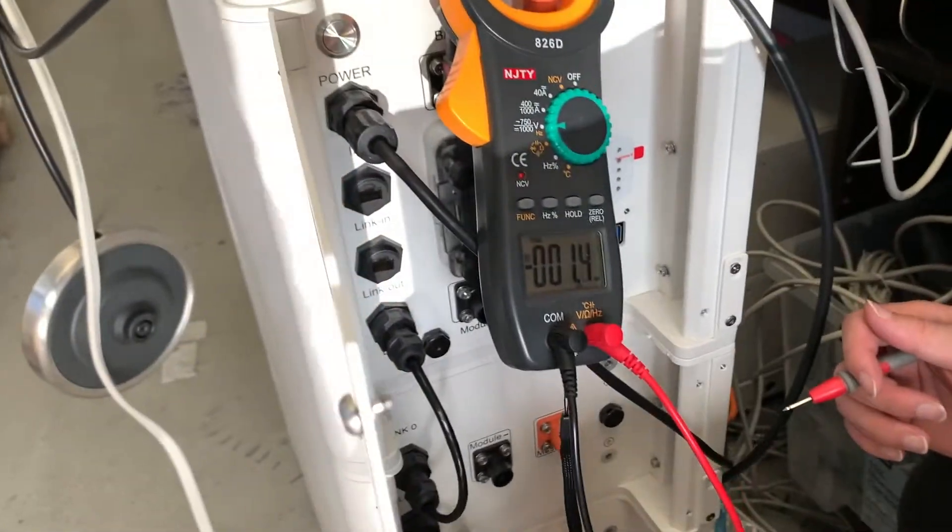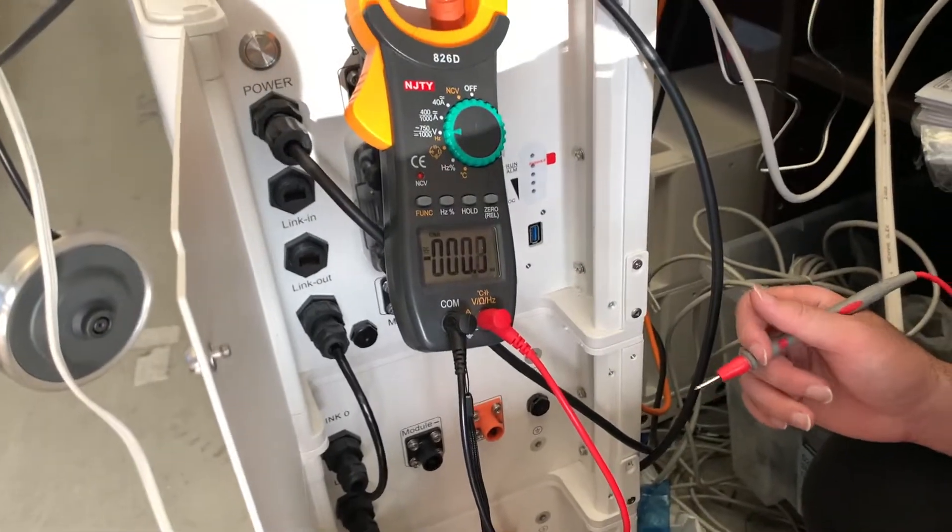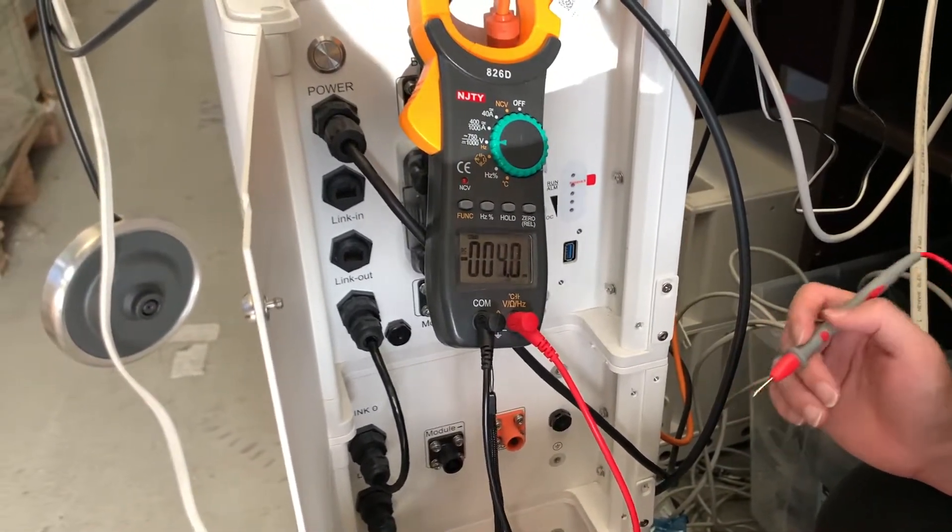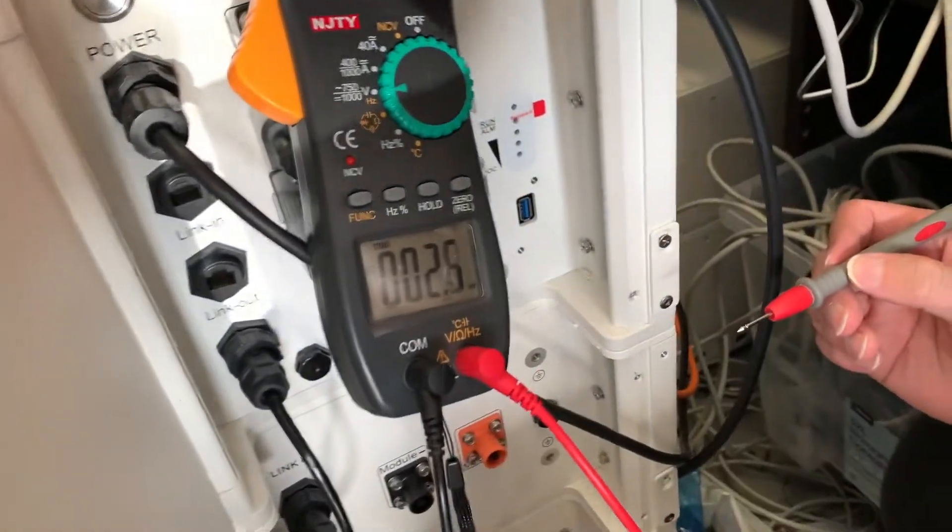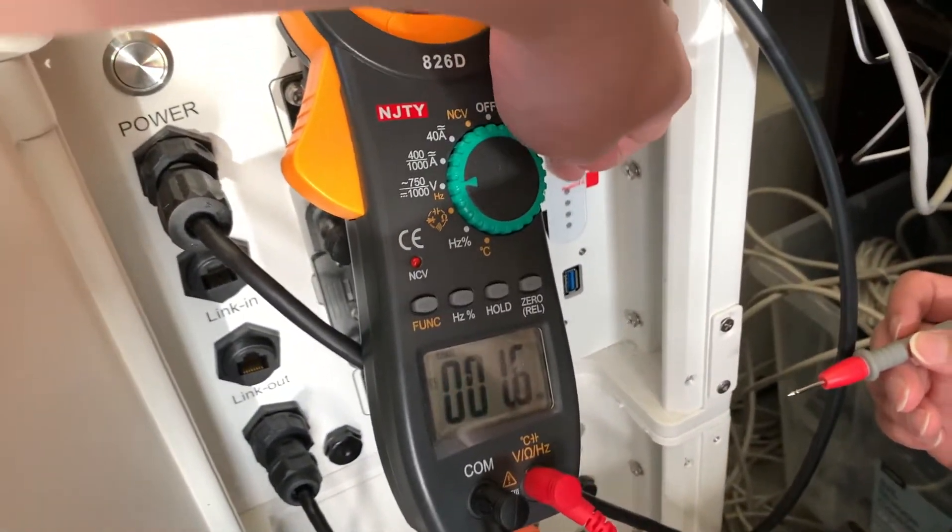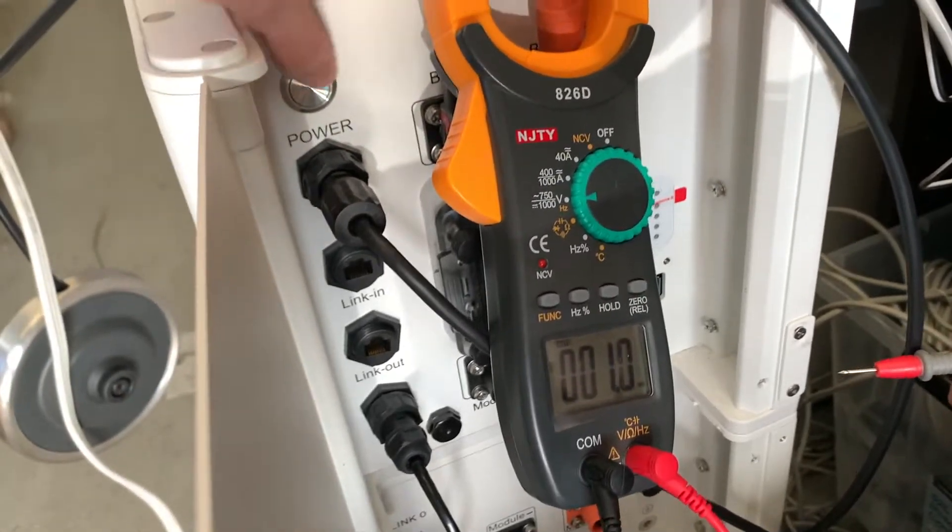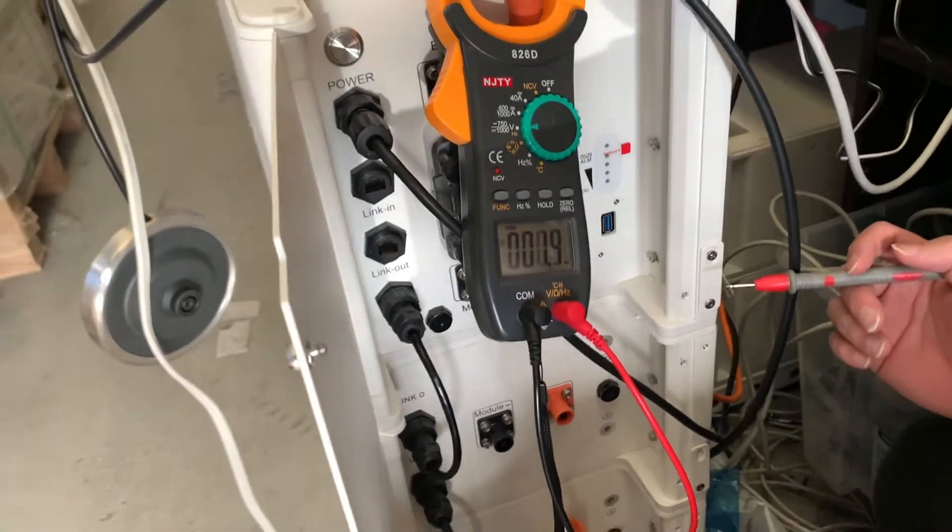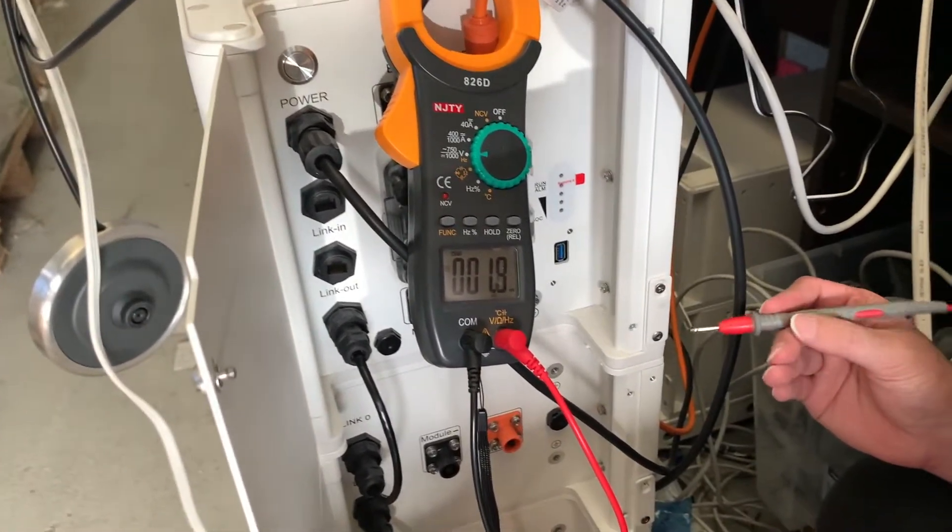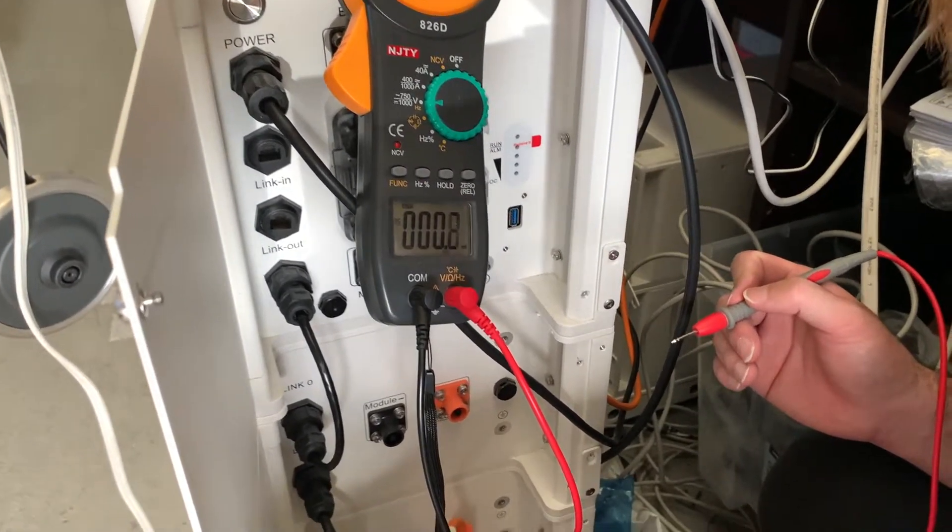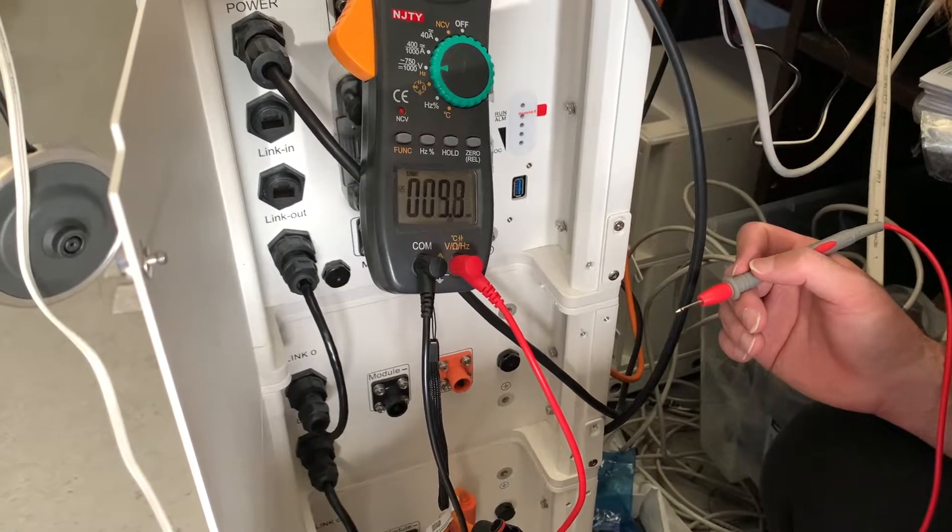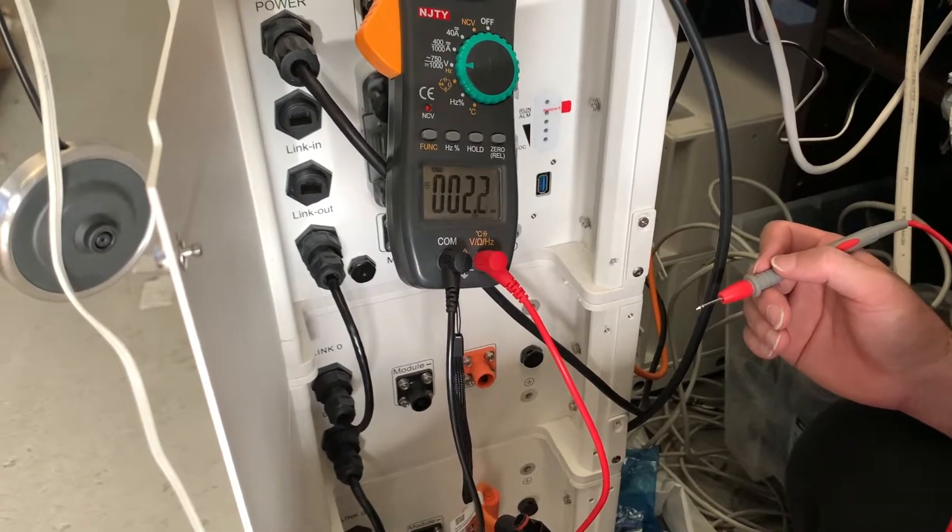Sometimes after you've checked the wiring, you still cannot power up the batteries. You can see the LED light is located here, and the power button is here. If you've checked everything and still cannot turn on the battery, the battery might be running out of power. In that case, we need to check the voltage for each battery.